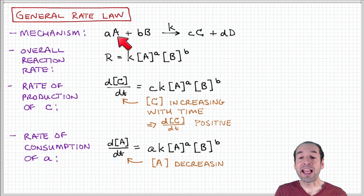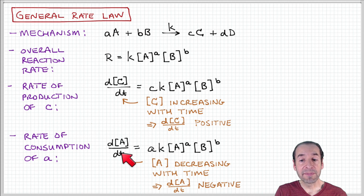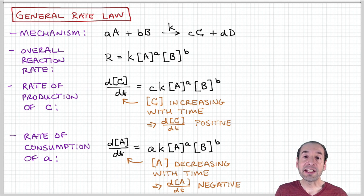We can also talk about the rate of consumption of, for example, reactant A. So the rate of change of concentration of A with respect to time is again equal to the rate of reaction times the stoichiometric coefficient A. Notice here that since A is a reactant, it's being consumed as the reaction progresses. So we expect this rate of change of the concentration of A with respect to time to be a decreasing or negative quantity.